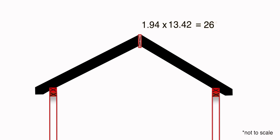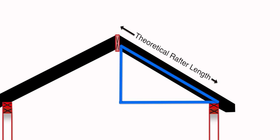With that number figured out, we can now see the length of our rafter, which is from the side of the ridge board down to the outside wall. This measurement does not include the overhang amount, and that's why it's called the theoretical rafter length. Like the slope of a roof, the overhang amount — including the fascia and soffit cuts — are determined by architectural design, codes, or personal preference.